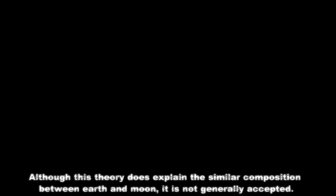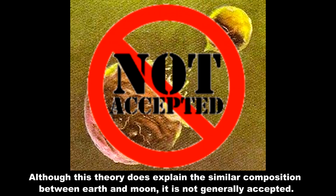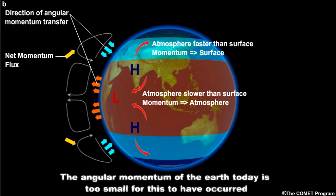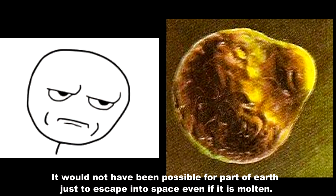The Verdict: Although this theory explained the similar composition between earth and the moon, it is not generally accepted. The angular momentum of the earth today is too small for this to have occurred. It would not have been possible for part of the earth to just escape into space, even if it was molten.